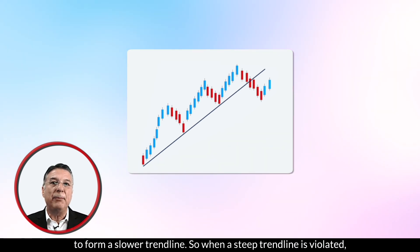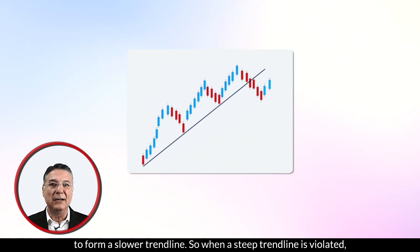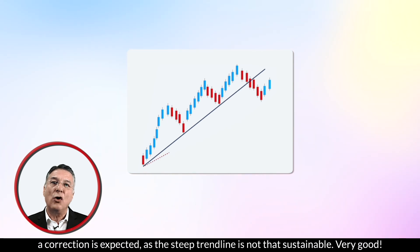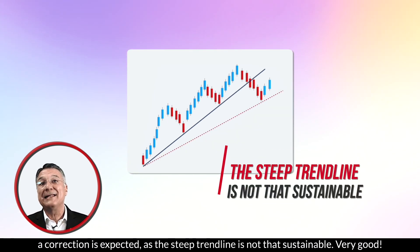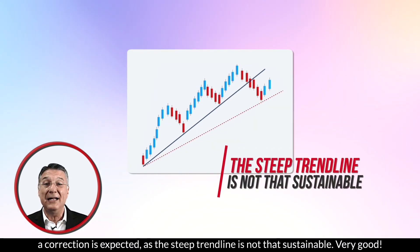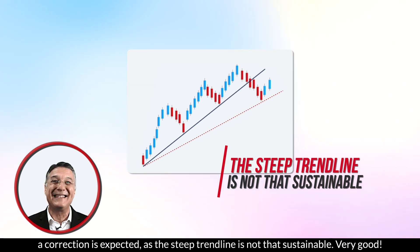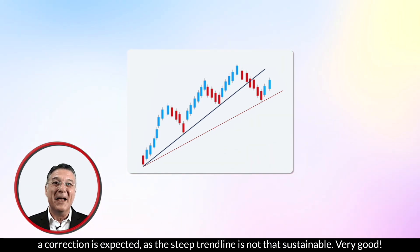So when a steep trend line is violated, a correction is expected, as the steep trend line is not that sustainable.